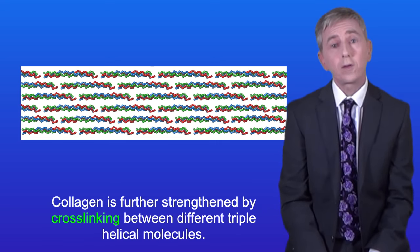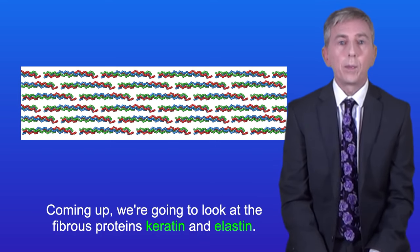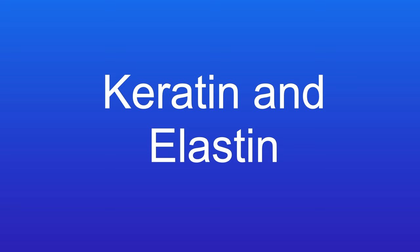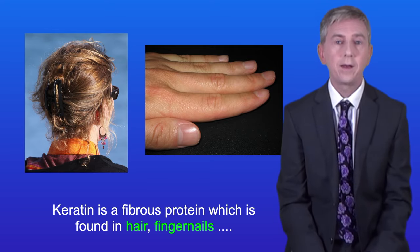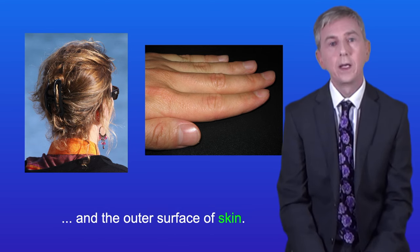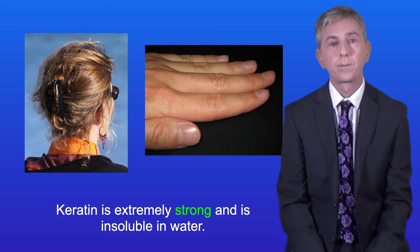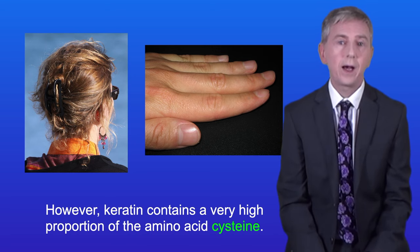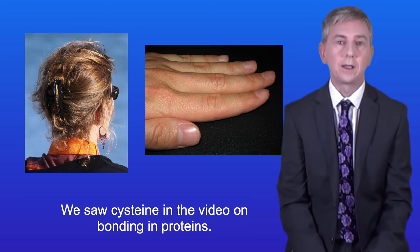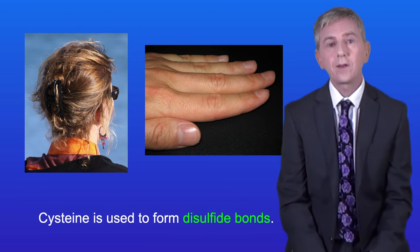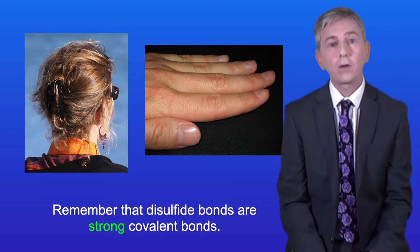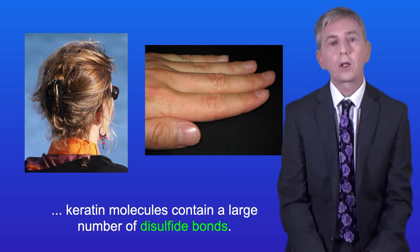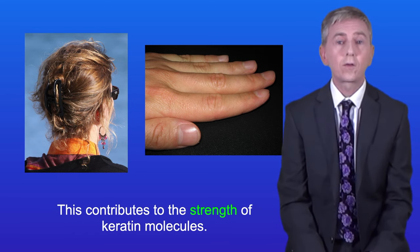Collagen is further strengthened by cross-linking between different triple helical molecules. Turning now to keratin — keratin consists of long stranded molecules. However, keratin contains a very high proportion of the amino acid cysteine. Cysteine is used to form disulfide bonds, which are strong covalent bonds. Because keratin contains a high proportion of cysteine, keratin molecules contain a large number of disulfide bonds, and this contributes to the strength of keratin molecules.